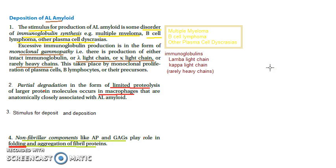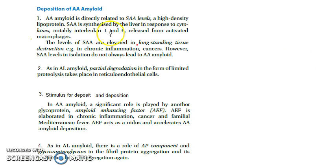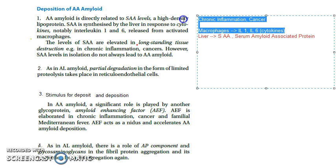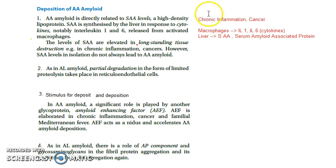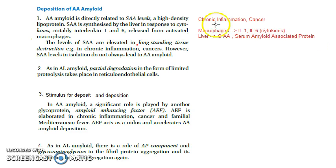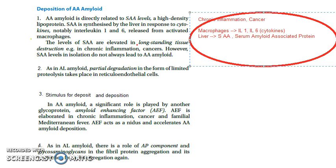That completes the deposition of AL amyloid. Now moving on to AA amyloid — whenever there is chronic inflammation or cancer, the macrophages release IL-1 and IL-6, which are cytokines. These cytokines stimulate the liver to produce SAA — serum amyloid associated protein — which is the precursor for the AA protein.